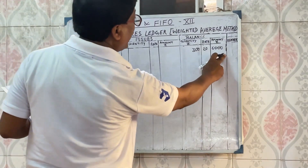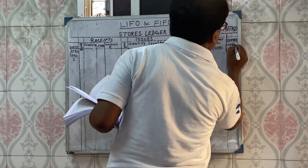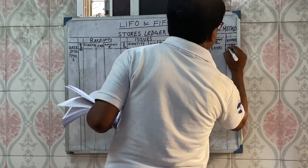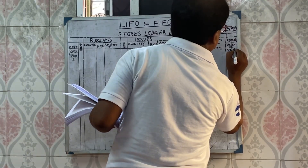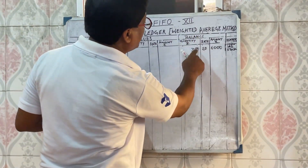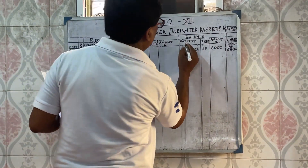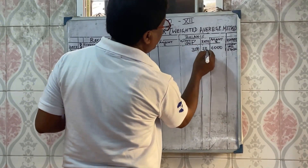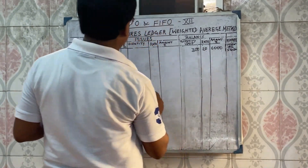Balance, opening stock, opening. Stop. So, in 2020, April 1, balance 0 — 300 balance is made, 300 units are made. And the rate is made.